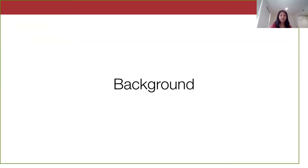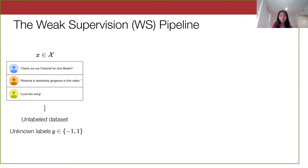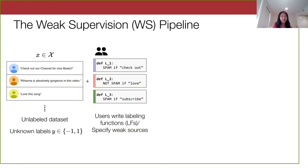I'll first describe how the weak supervision pipeline works. We always start with an unlabeled dataset with unknown labels — here assumed to be binary, plus or minus one. The example I have is the spam YouTube dataset, which is a bunch of YouTube comments on music videos that are either spam or not. In weak supervision, users write programmatic labeling functions — noisy heuristics. I'll refer to them interchangeably as weak sources and labeling functions.